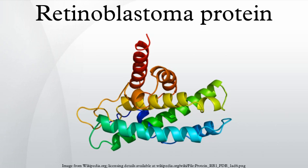Regarding name and genetics: in humans, the protein is encoded by the RB1 gene located on 13q14.1-q14.2. If both alleles of this gene are mutated early in life, the protein is inactivated and results in development of retinoblastoma cancer, hence the name RB.